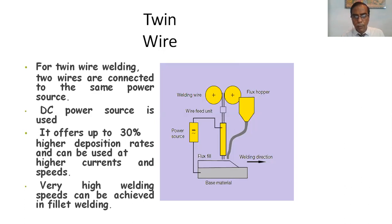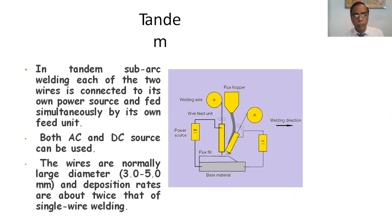Tandem. In tandem submerged arc welding each of the two wires are connected to its own power source and fed simultaneously by its own feed unit. Both AC and DC sources can be used. The wires are normally large diameter, 3 to 5 millimeter, and deposition rates are about twice that of single wire welding. This is flux hopper, twin wire, wire feed unit, and power source.